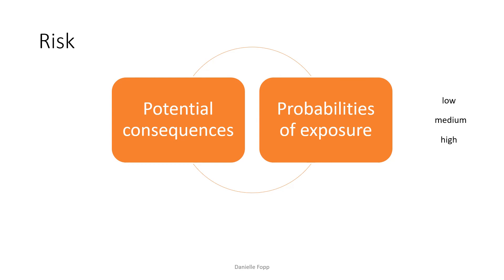Making decisions under risk means you know the probability estimates. You have some knowledge and can assign subjective probabilities — for example, low, medium or high — regarding an event. In making decisions under risk, you have some knowledge regarding the likelihood of occurrence of each outcome, you measure that likelihood with probability, and you can predict the possibility of a future outcome. We will look more into risk later in the course.